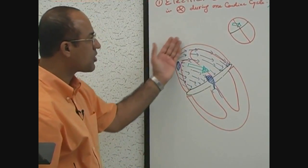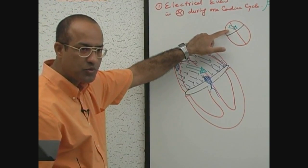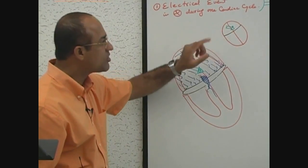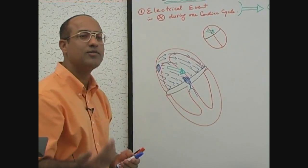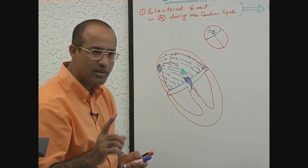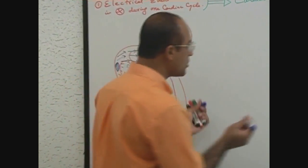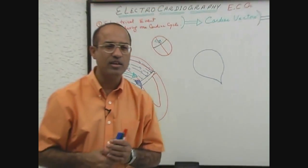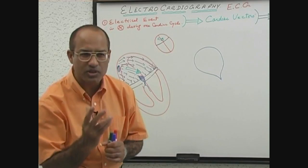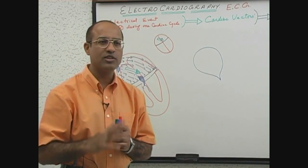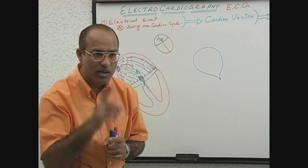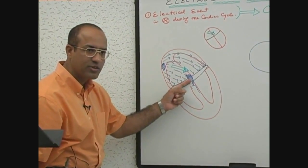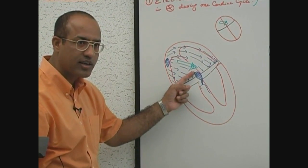So the first electrical event is depolarization of the atria, represented by a small depolarizing vector moving downward and leftward with moderate velocity. The second electrical event is stimulation of the AV node. The AV node is modified, specialized myocardium that specializes in slow conduction. When atrial current reaches the AV node, the AV node conducts the current very, very slowly, so depolarization takes about 0.1 second to pass through.